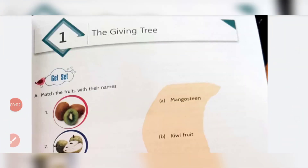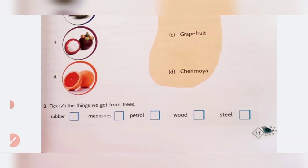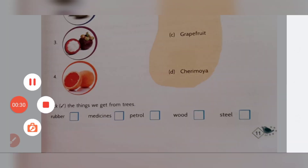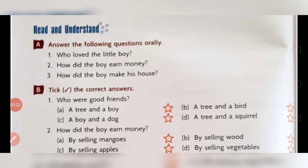Hello students of class 4, welcome to English class. Today in this video we will discuss the exercises of chapter number one from your reader book 'Roots and Wings' — that is chapter number one, 'The Giving Tree.' Questions A and B of page number 11 we have discussed in part one video. Now let's move to page number 14 and come to the exercises: read and understand.